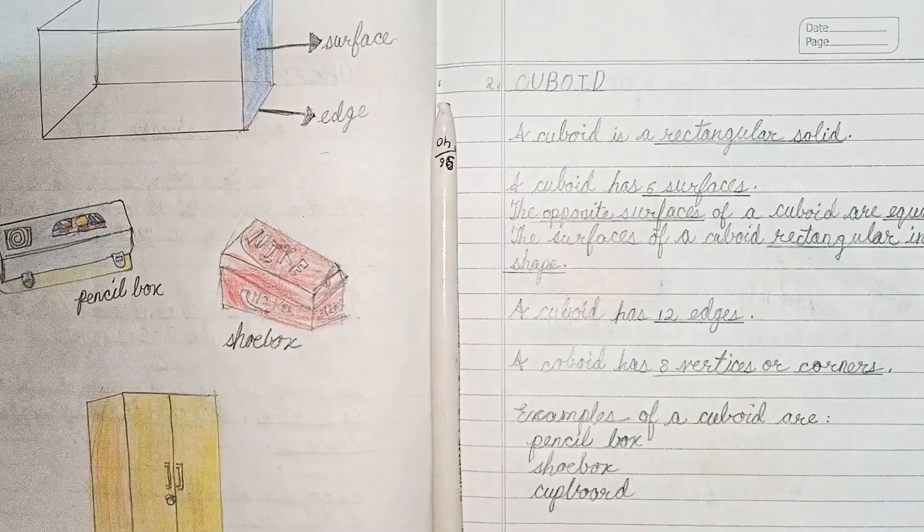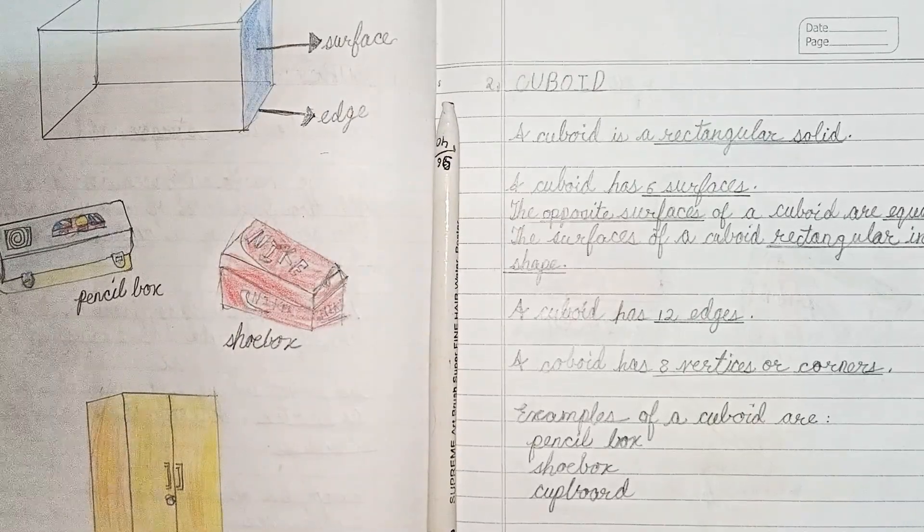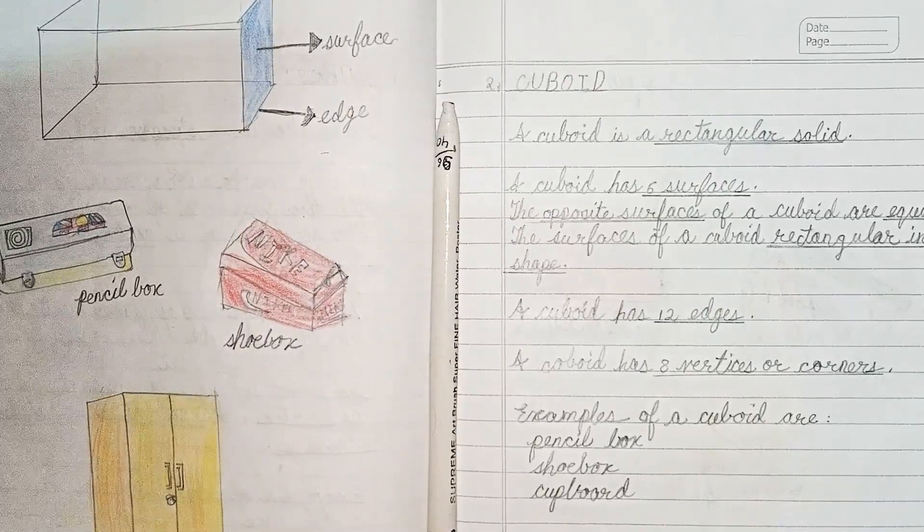For example, pencil box, shoe box, cupboard - these are all cuboid in shape.